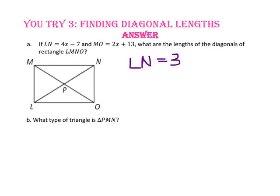Part B asks: what type of triangle is triangle PMN? Since the diagonals of a rectangle are congruent and the diagonals bisect each other in a parallelogram, all four half-diagonal segments are congruent. Since triangle PMN has two congruent sides, it is an isosceles triangle.